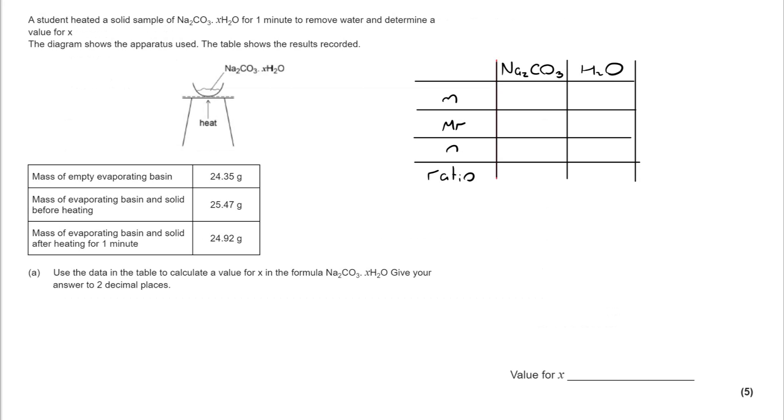So in the first instance on this question, I'm going to approach it as I would any reacting masses question, or actually any empirical formula calculation. And so the only difference between this and an empirical formula calculation is I don't have elements at the top of the table. I have the compound and I have water. And I can then start to think about putting the information in. But I've still got a little bit to do on this one before I can get there, because I've got some experimental data.